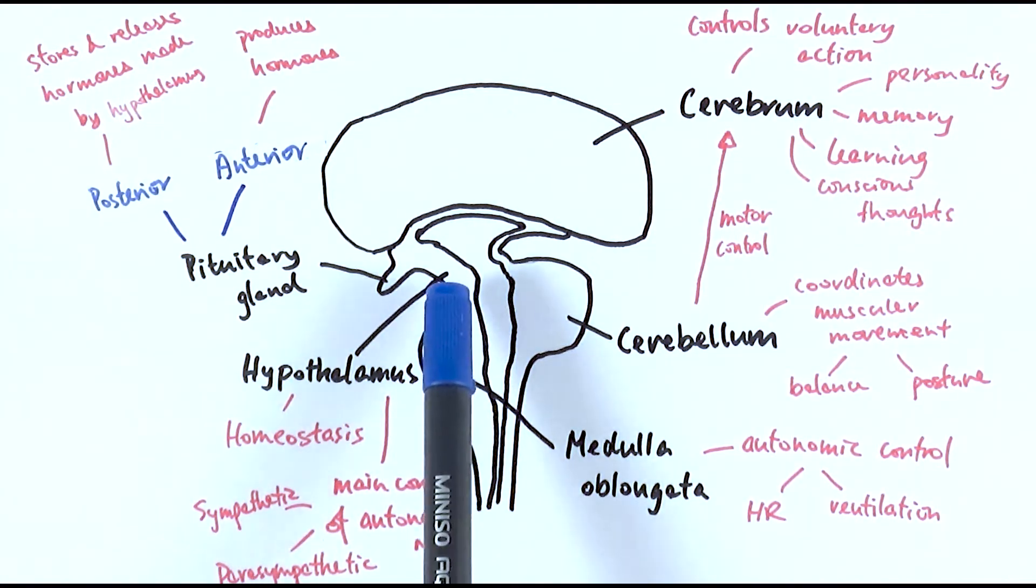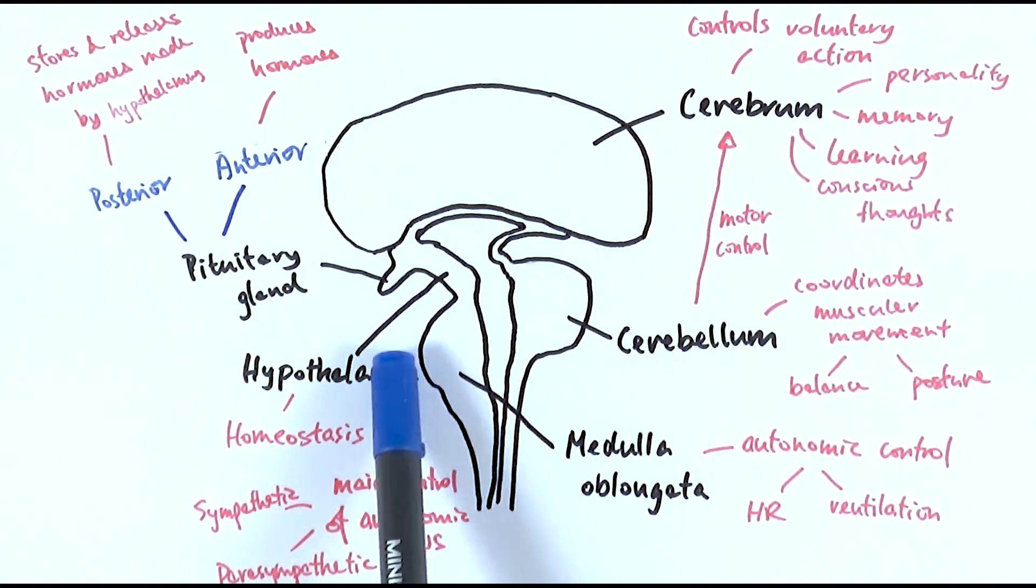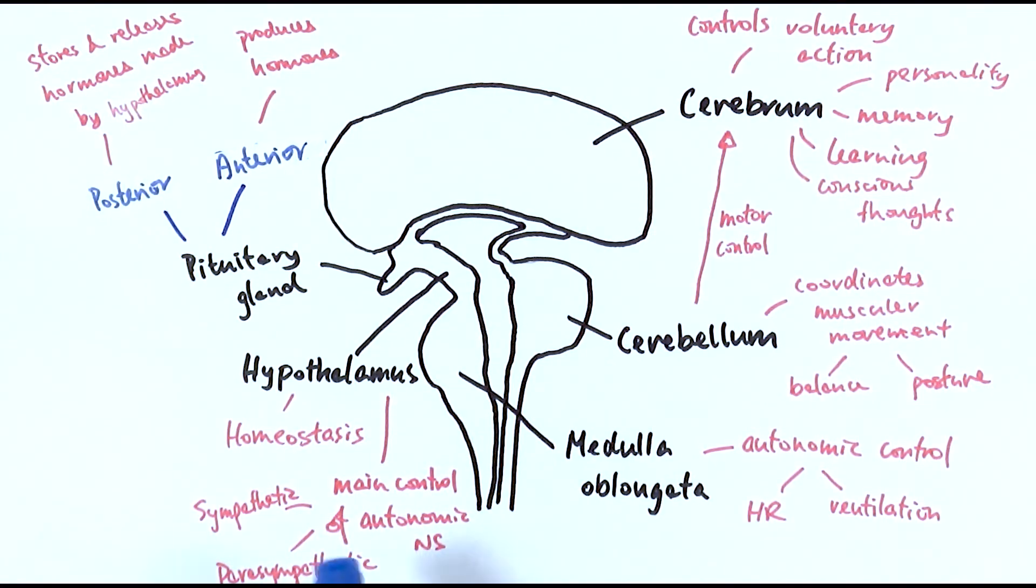Then we've got the hypothalamus which is this part here, and it has a major role in homeostasis and other autonomic controls, and it coordinates basically how our body responds to different situations. So depending on if we're at a stressful situation then they would give out a sympathetic response, or if you're relaxing or digesting food for example it would have a parasympathetic response.